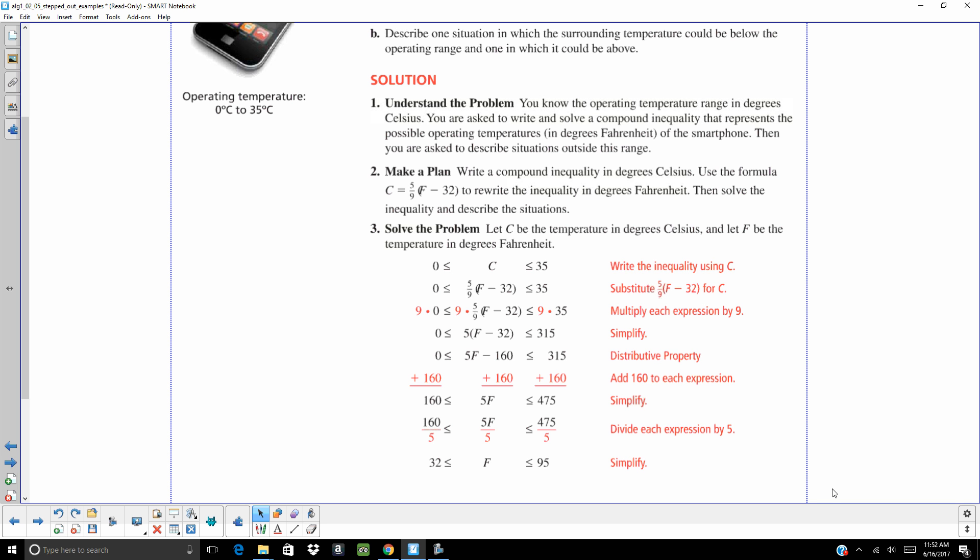And it has to be between 32 degrees F and 95 degrees F. Did anybody think about actually just converting the temperatures first and then writing the inequality? I think that's probably the plan I would have gone with. But this way, it's 100% acceptable. If you wanted to convert your temperatures first and then write the inequality, I think that's fine as well.